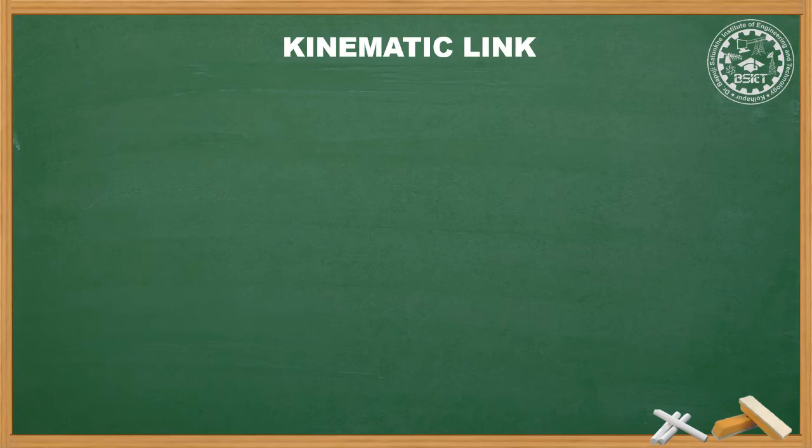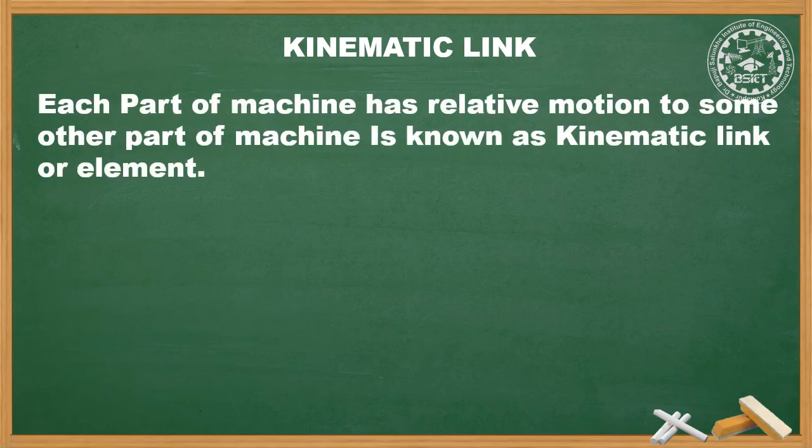Now here we start our main definitions — Kinematic Link. Each part of a machine which has relative motion to some other part of that machine is known as a Kinematic Link or element.